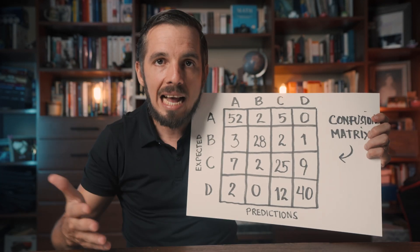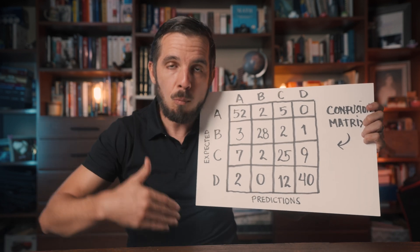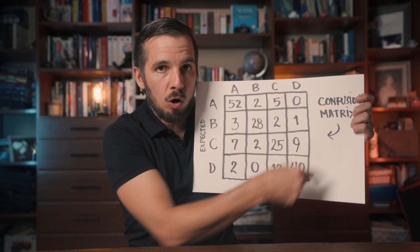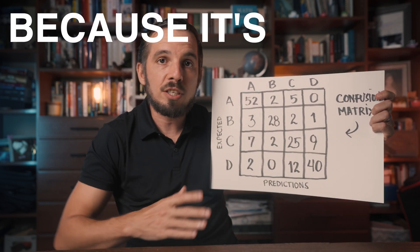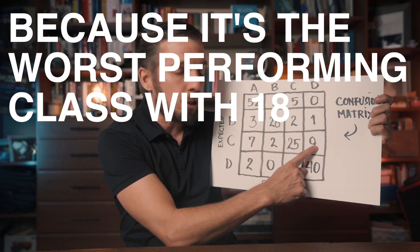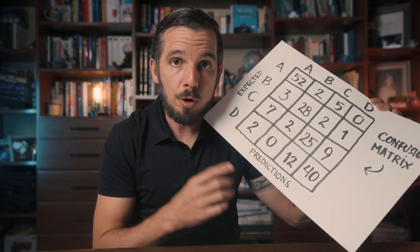The confusion matrix zooms into the results of the model — it shows us every correct and incorrect prediction, and more interestingly, how the model is doing with every class combination. So if I had no other information and wanted to decide the best strategy for my time, I would focus on class C, because it's the worst performing class with 18 total mistakes. This confusion matrix makes it painfully clear where the problems are and where you should focus your time. This is a tool you cannot ignore.